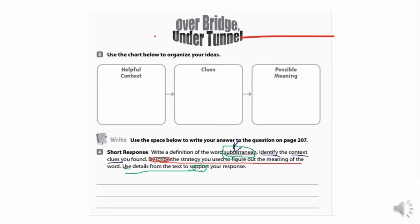The first part of the chart says helpful context — what sentences or paragraphs can help us determine the meaning of subterranean? Given those contexts, what clues could we pull from those sentences? And in the last box, based on our clues, what could be a possible meaning of the word subterranean? That's what we're aiming for.